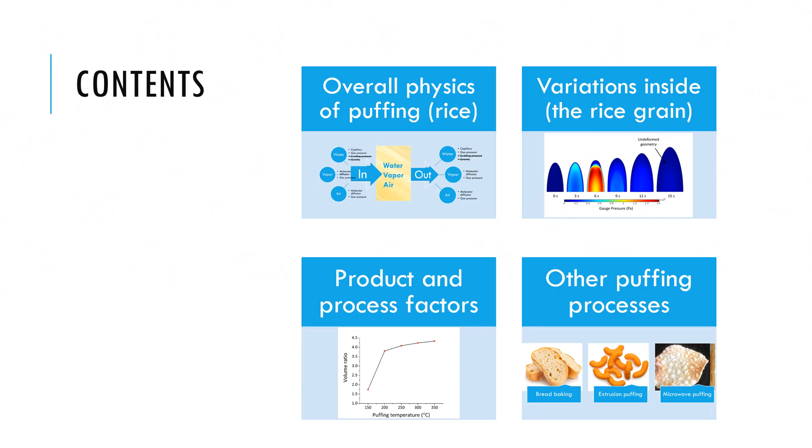The video will give an idea of the detailed spatial and time variations of temperature, moisture, etc., inside the rice grain during puffing. The following video will look at how product and process factors affect this puffing process. So we now go through the changes with position and time of the many variables during a puffing process with rice puffing as the example.